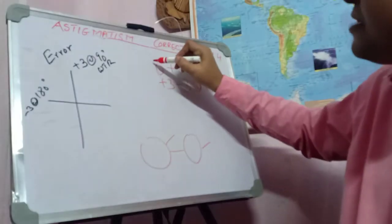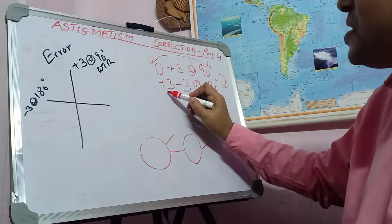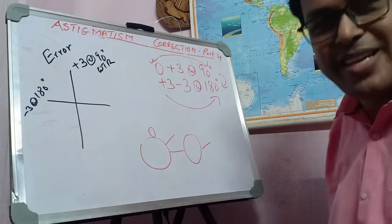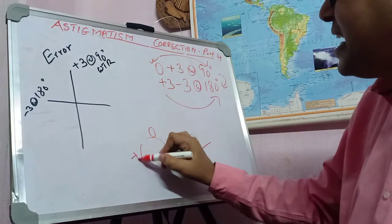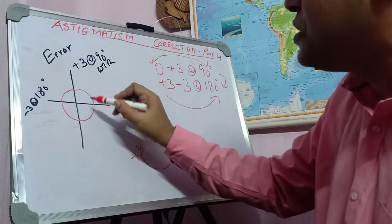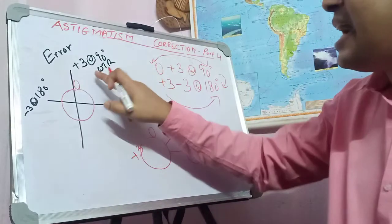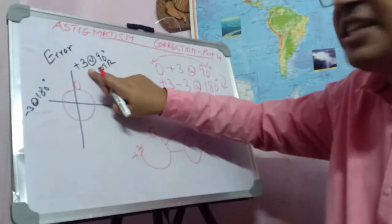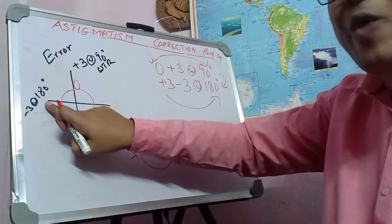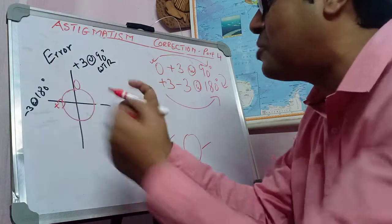What happens is that you get one principal meridian which was plano at 90 degrees, and another principal meridian which is plus 3 at 180 degrees. So the patient gets 0 power at 90 degrees and plus 3 at 180 degrees. The patient wears the glass like this — plano power at 90 degrees because the patient already has a steep meridian in the eye at 90 degrees with with-the-rule astigmatism. So no power is added here; to negate the minus 3 at 180 degrees, you add plus 3 in the glass.